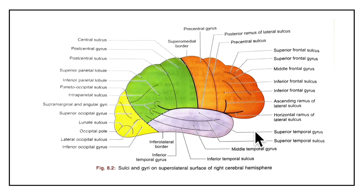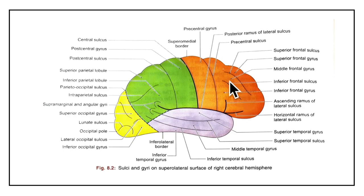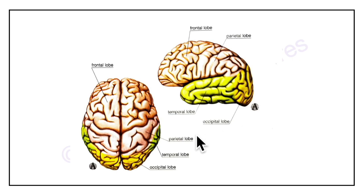Now we will be learning about the lobes of the cerebral hemisphere and the sulci separating them. This is a lateral view of the right cerebral hemisphere. Each cerebral hemisphere is divided into four lobes: the frontal lobe in orange, the parietal lobe in green, the temporal lobe, and the occipital lobe in yellow. In the superior view we can also see the frontal lobe anteriorly, parietal lobe, occipital lobe posteriorly, and temporal lobe on the lateral aspect.